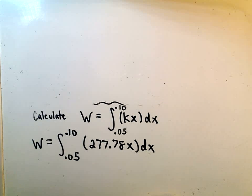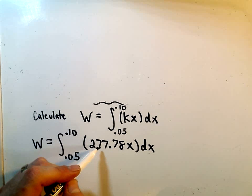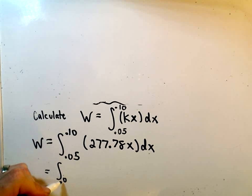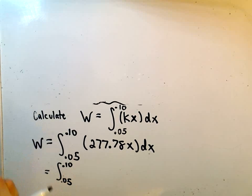So if we integrate this, probably what I'm going to do, if we simplify down our 277.78, I'm actually going to write that as a fraction. So 0.05 to 0.10.